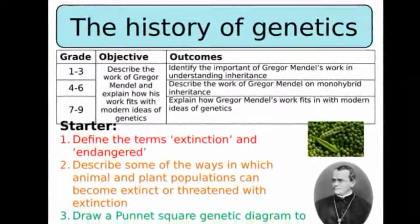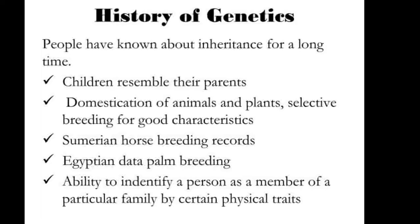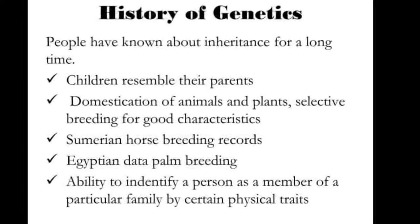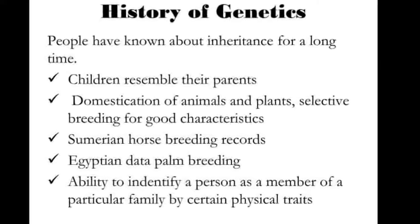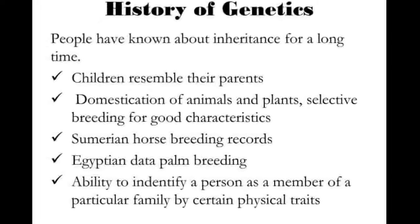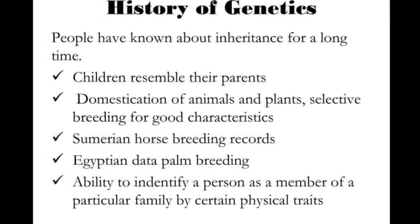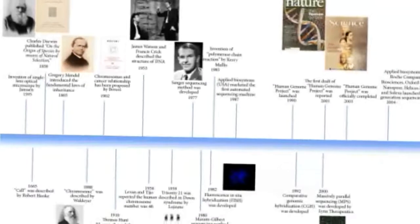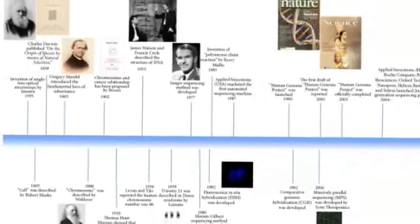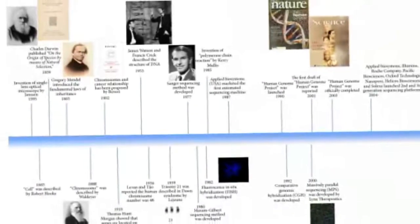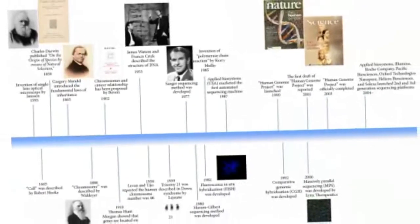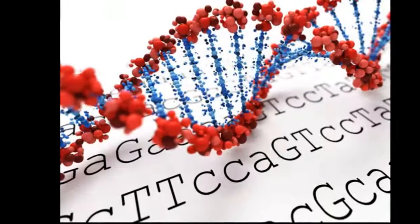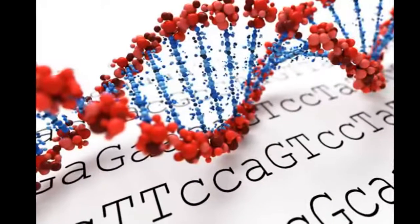Led by Thomas Hunt Morgan and his fellow Drosophilists, geneticists developed the Mendelian model, which was widely accepted by 1925. Alongside experimental work, mathematicians developed the statistical framework of population genetics, bringing genetic explanations into the study of evolution.